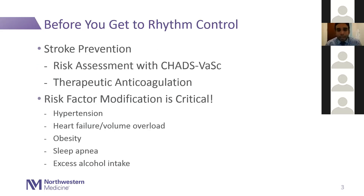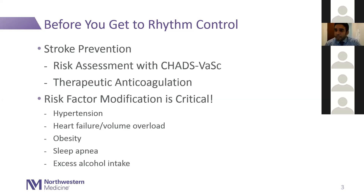Before we talk about the drugs, some basics we're all familiar with: when do you start thinking about rhythm control, and what do you address before you even get to rhythm control? For AFib, stroke prevention is priority number one. You want to assess stroke risk with the CHADS-VASc score and decide on therapeutic anticoagulation. When I see a patient in the clinic for AFib on that first visit, I really stress the importance of risk factor modification and optimizing everything from a lifestyle and medical comorbidities perspective.